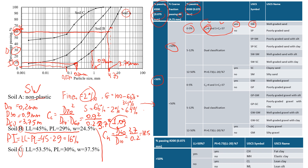Going through the table again for Soil B: the fines content is about 22%, which is still less than 50%, so we use the top chart. Almost 100% passes through the 4.75 mm sieve, so we go to the sand branch again. With 22% fines, it falls in the box for 12–50% fines.